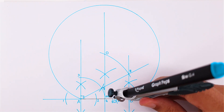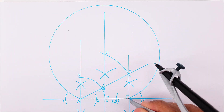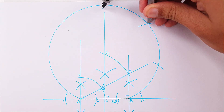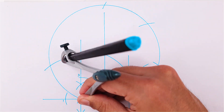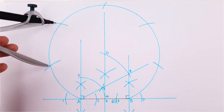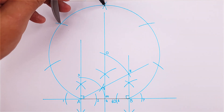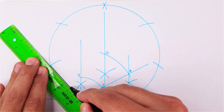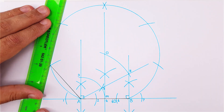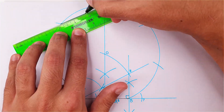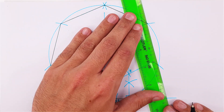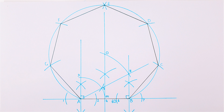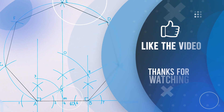Place your compass on point B and use the side length to mark out the sides for your heptagon. Then take your ruler and complete the heptagon. Hope you enjoyed the video and thanks for watching.